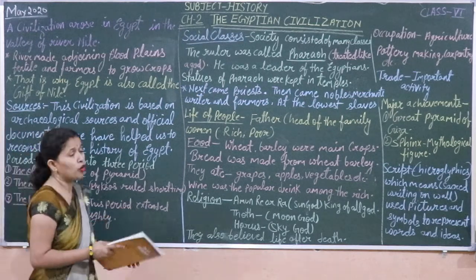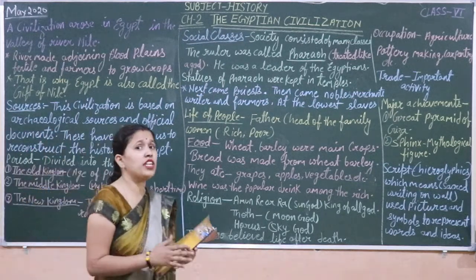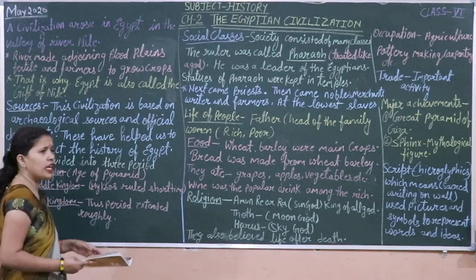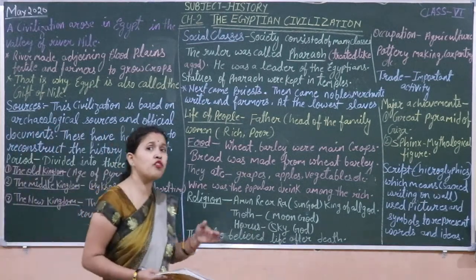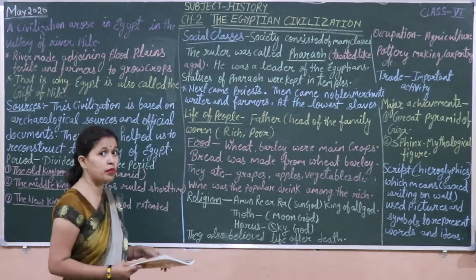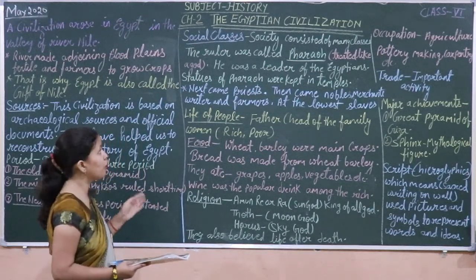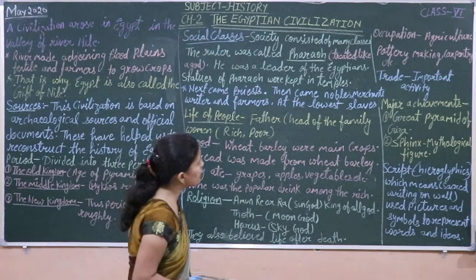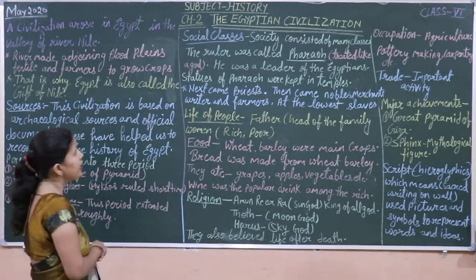Egyptian civilization had social classes. How many classes were there? The whole civilization was divided into 4 classes. Society consisted of many classes — there were 4 main classes.